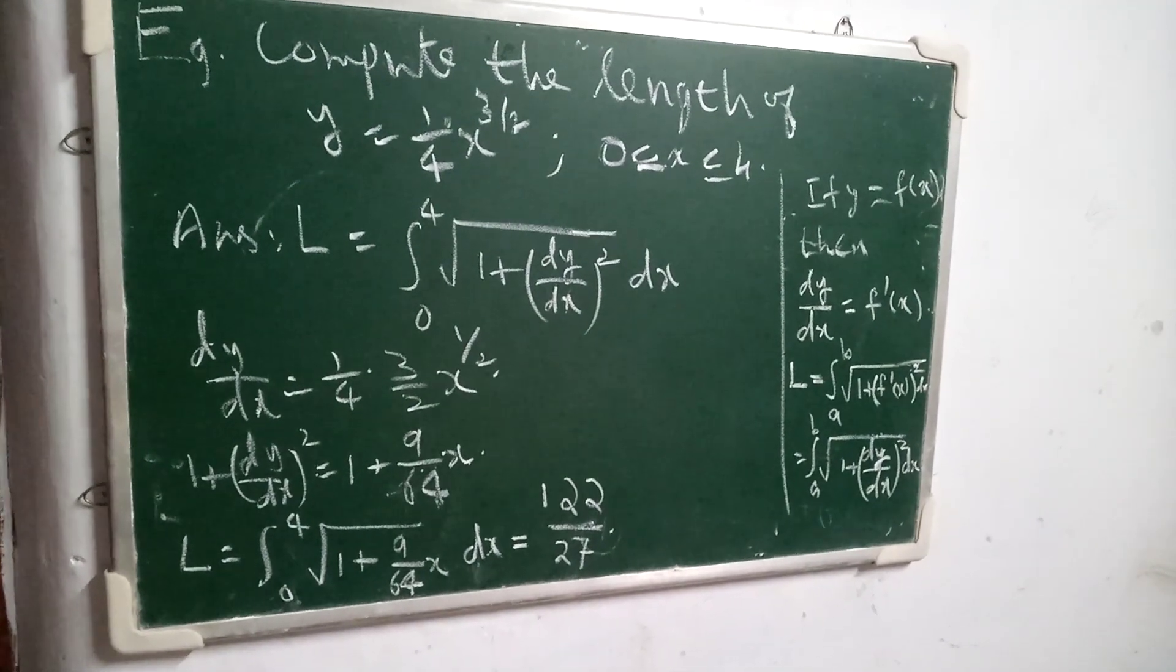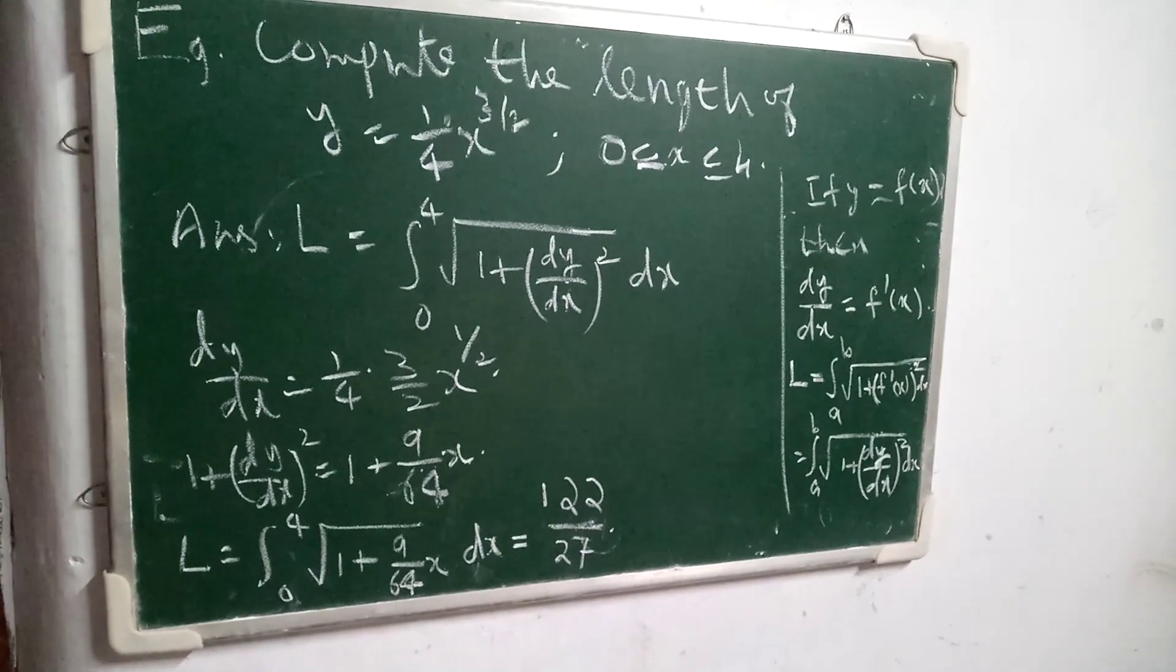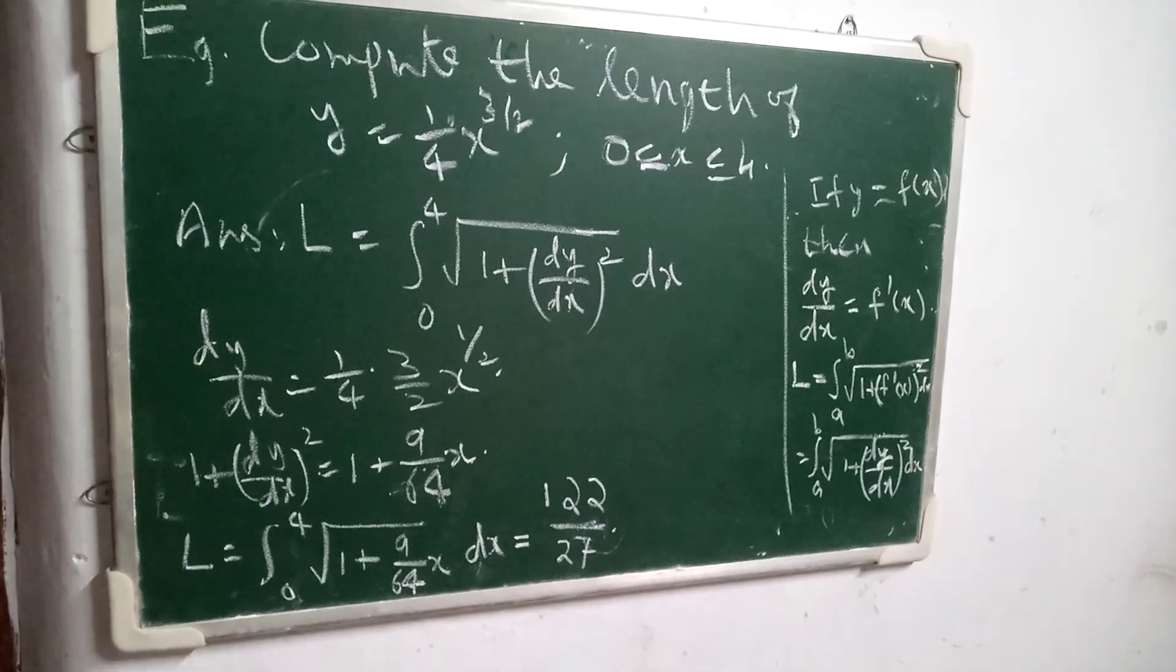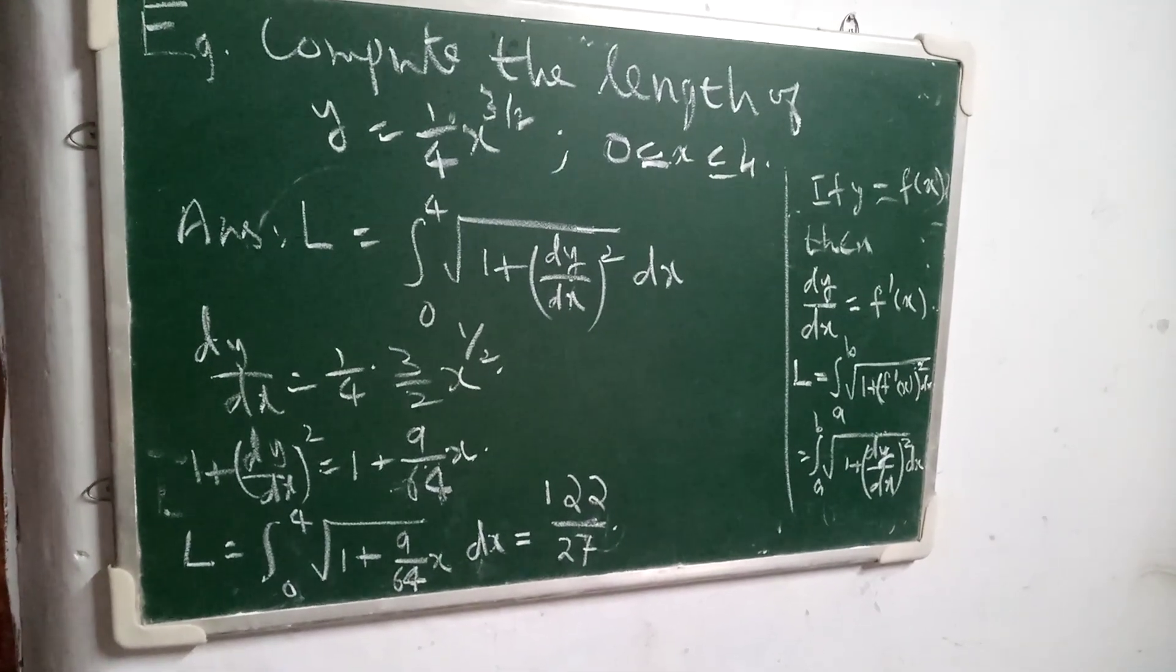You can see the right side of the board. If y equal to f of x, then dy by dx is equal to f dash x. So what is f dash x whole square? It is dy by dx the whole square.